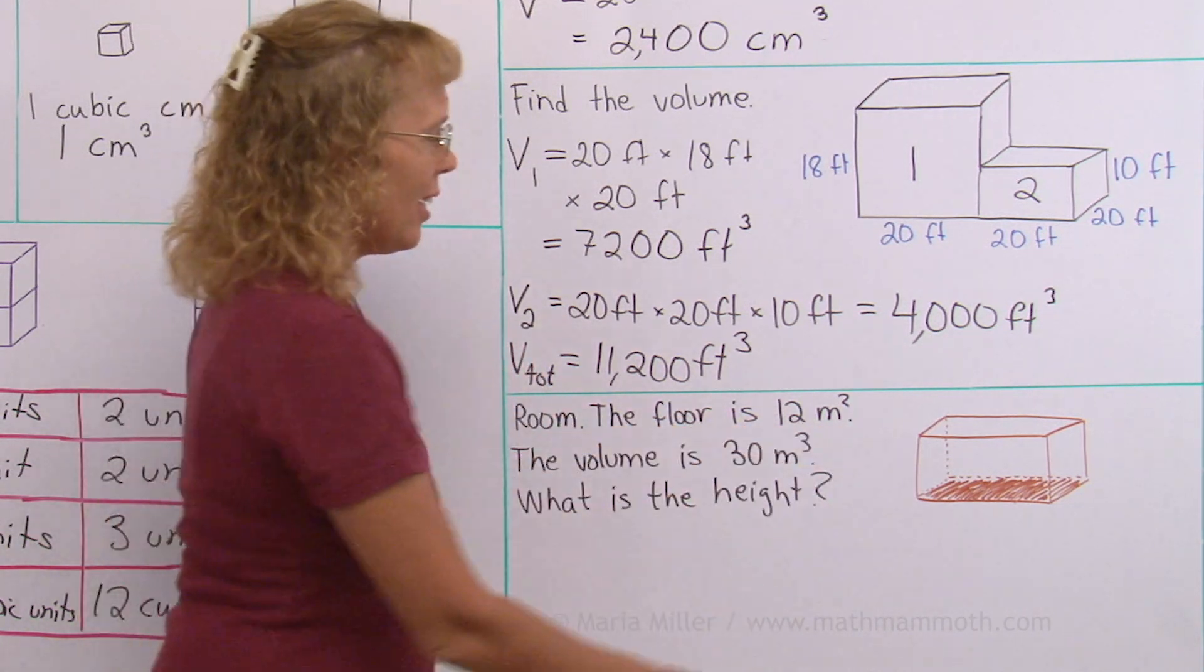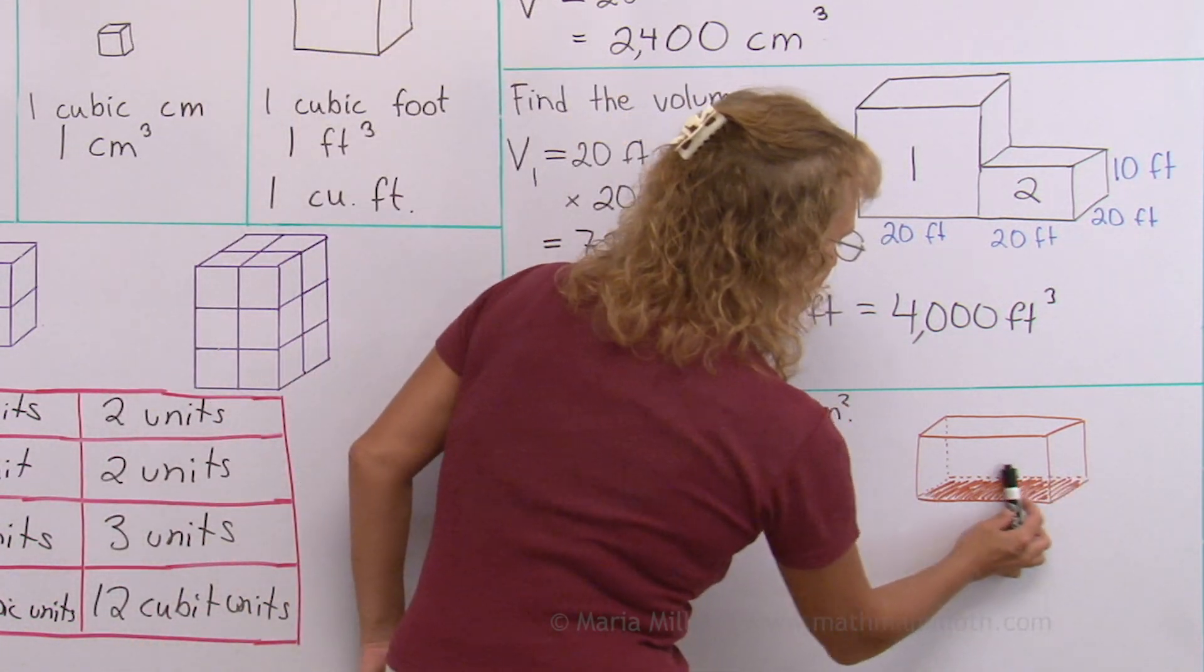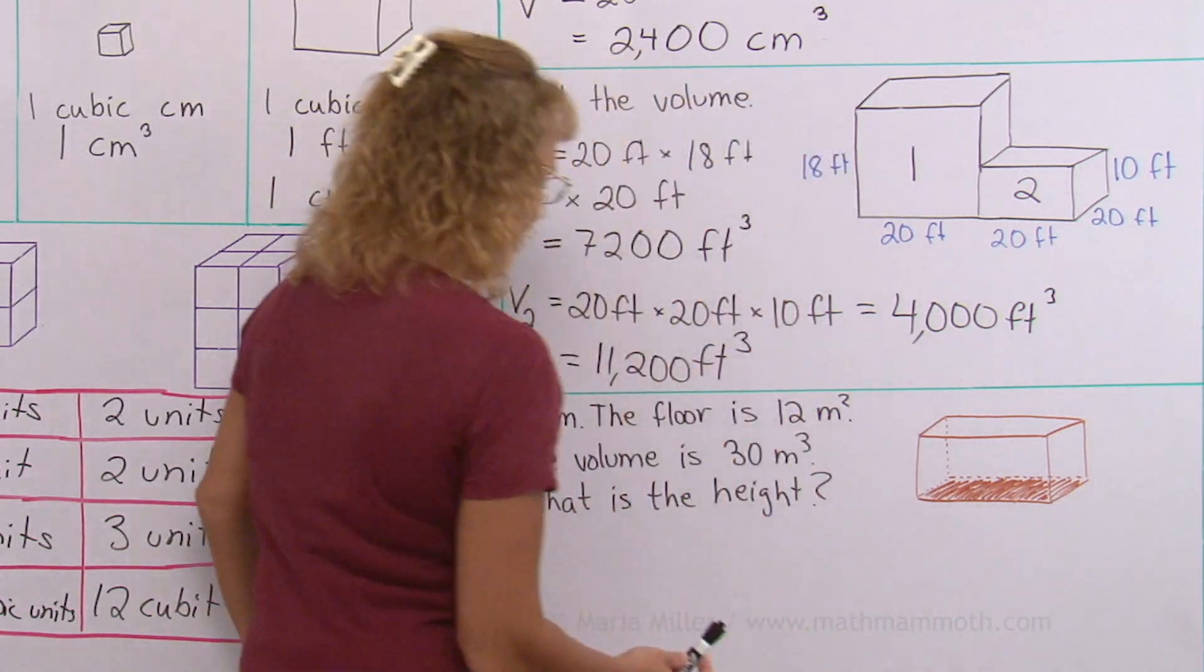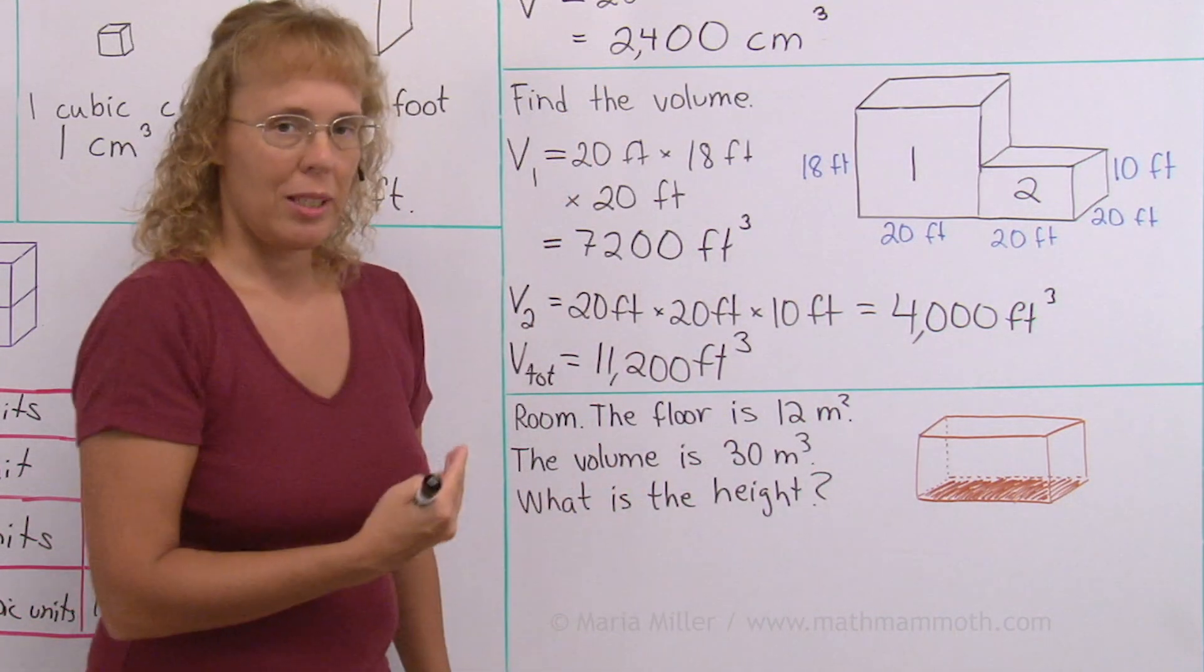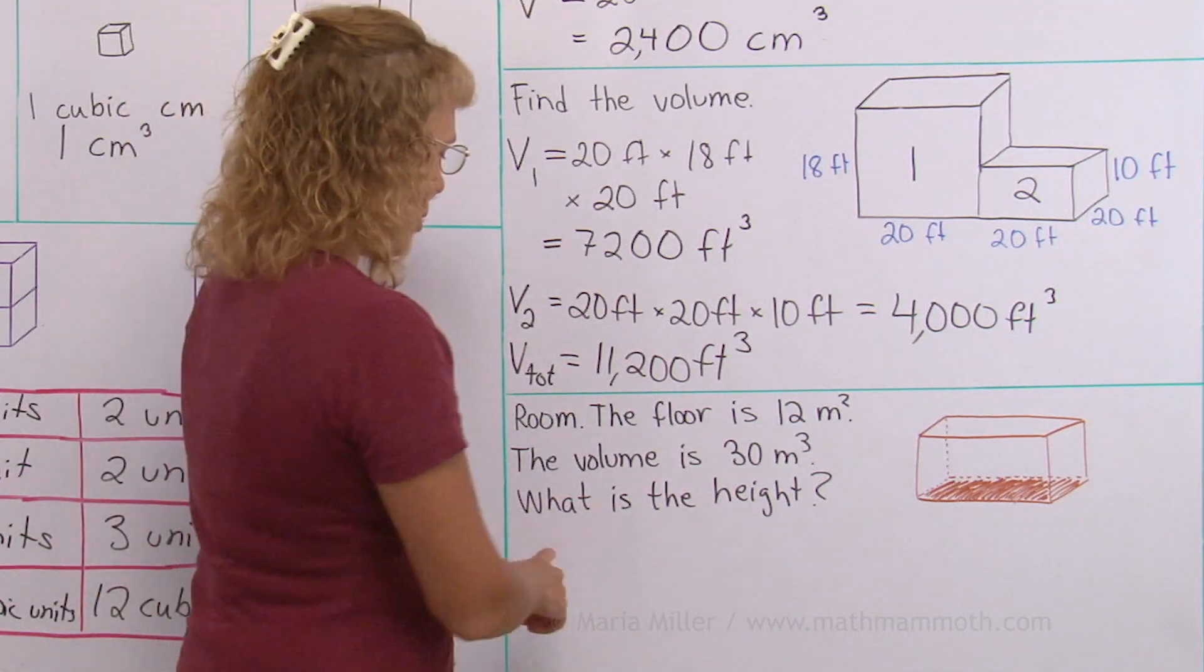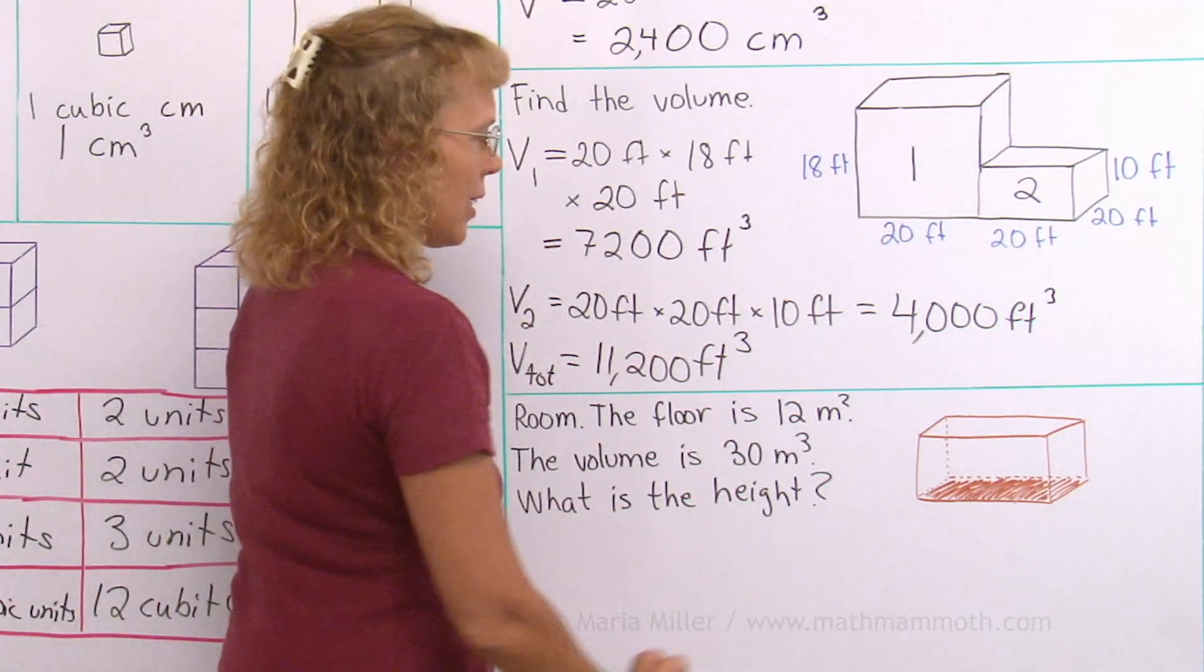that means the area of this floor is 12 square meters. The volume is 30 cubic meters. What is the height?